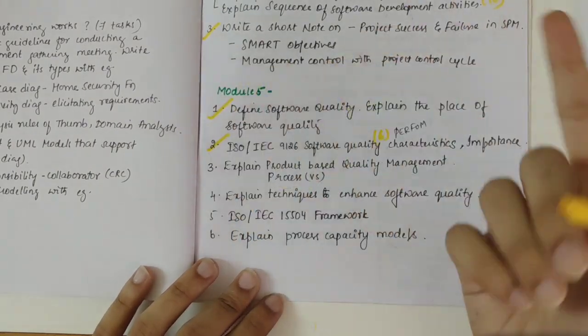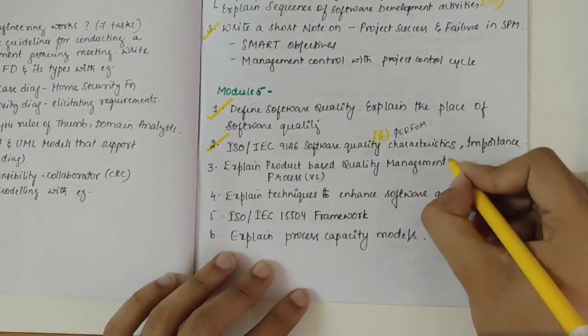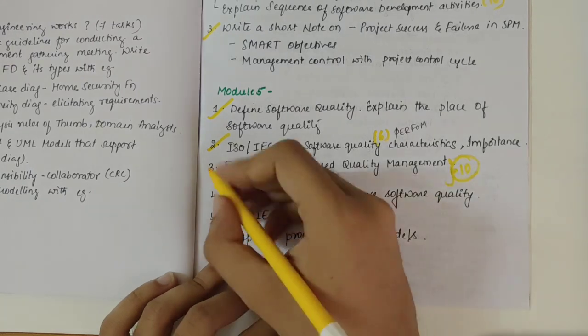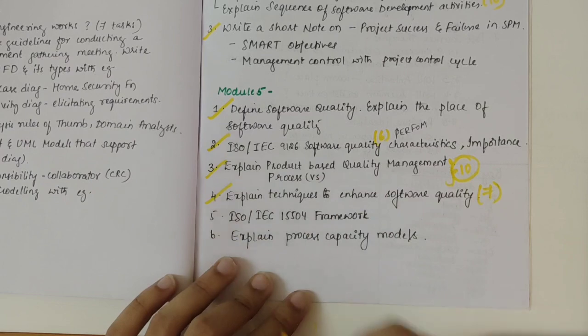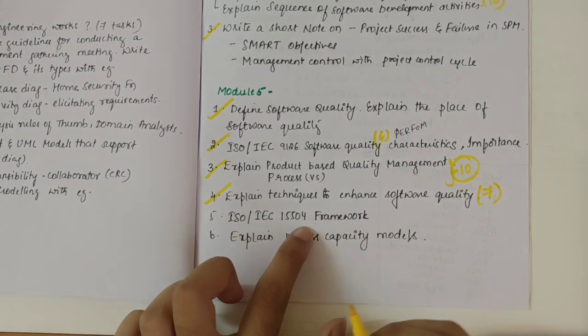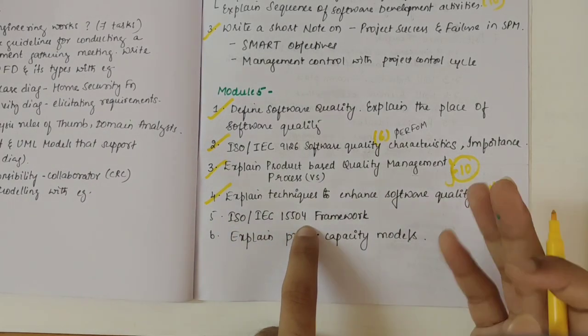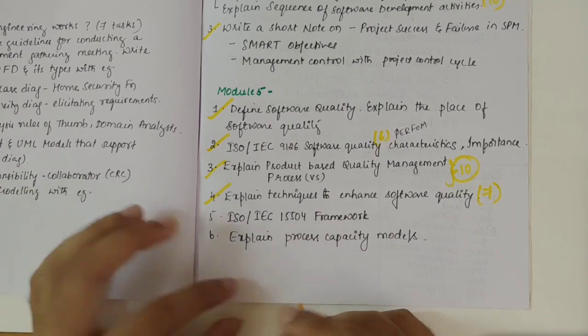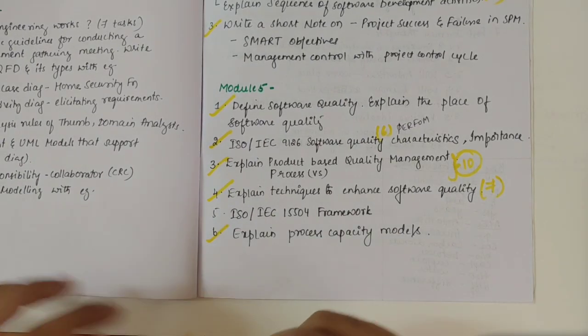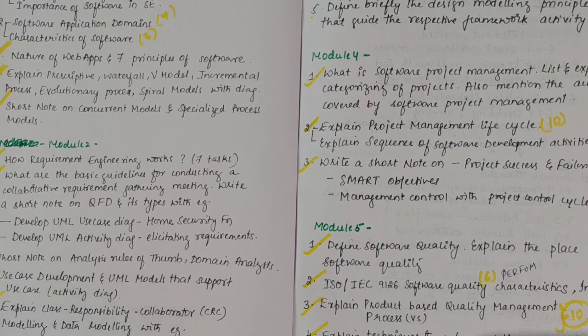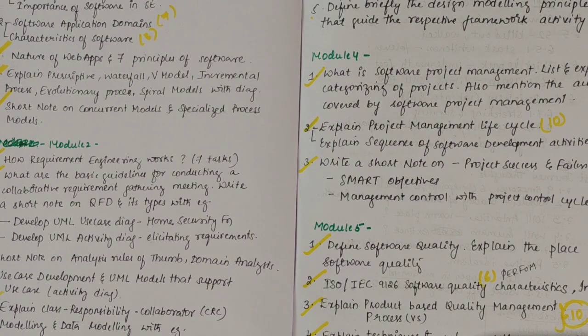Define software quality - this is again important. Then out of these two one would be asked for 10 marks. Then we have techniques to enhance software quality - there are 6 to 7 techniques. And then process capacity models. This is again important one. I would say that SAPM subject is moderately easy. And if you cover these questions now you will be thorough for the exam.